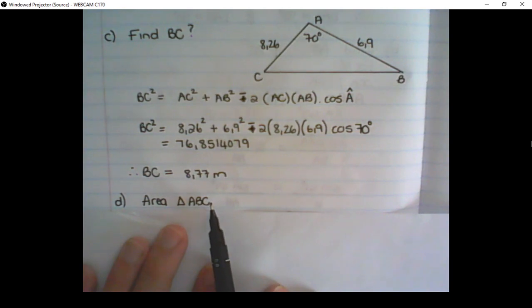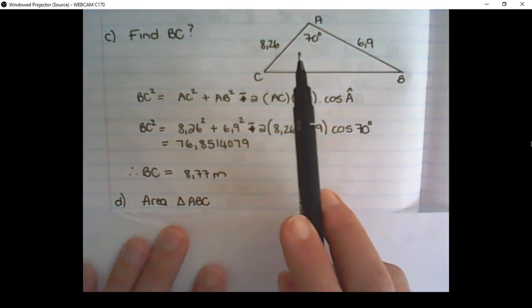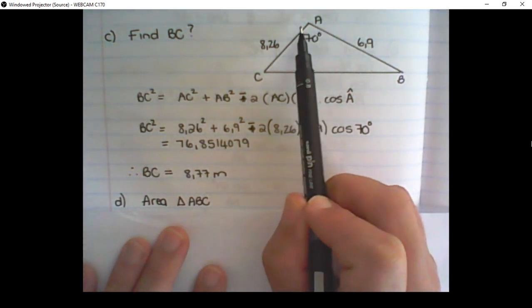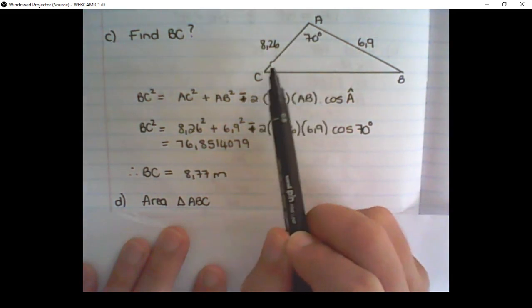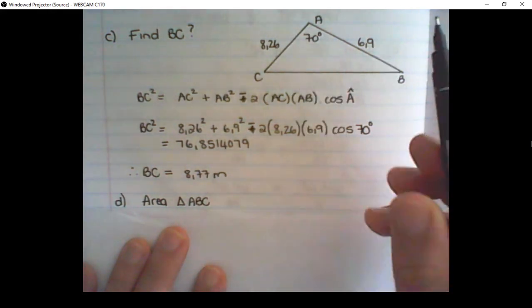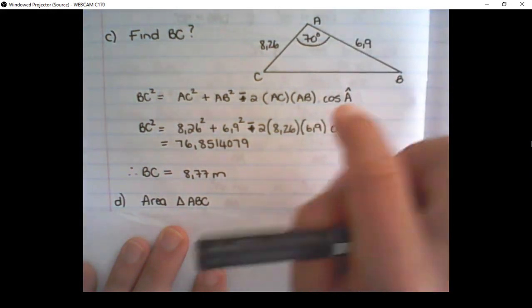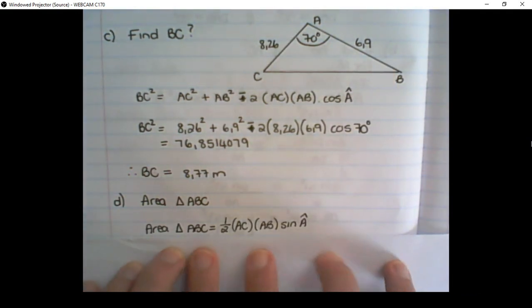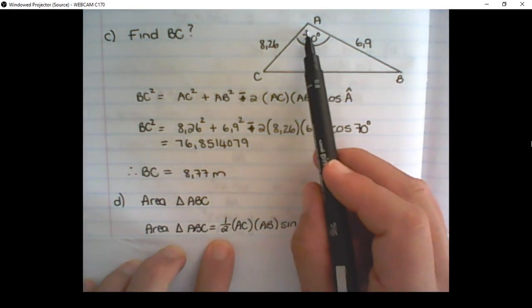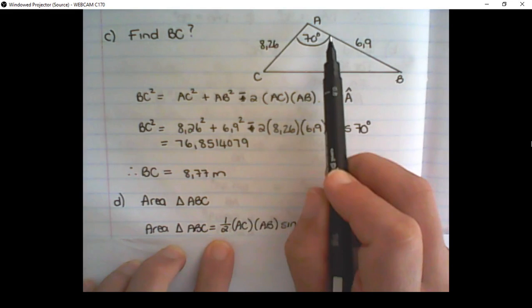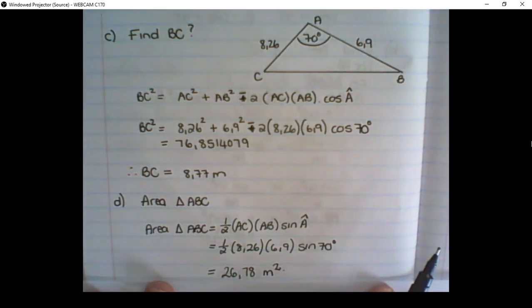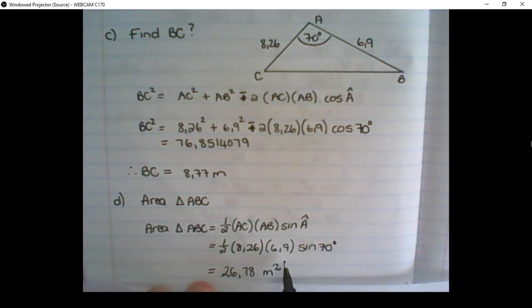Another question that can be asked is to determine the area of triangle ABC. We have enough information to apply the area rule. Remember, for the area rule, we need an angle and the lengths of two sides connected to that angle. So we can see that we have the information required to apply the area rule. So the area rule is half of AC times AB times the sin of A. I substitute the values in and simplify using my calculator. Notice the answer is meters squared because we are calculating the area.